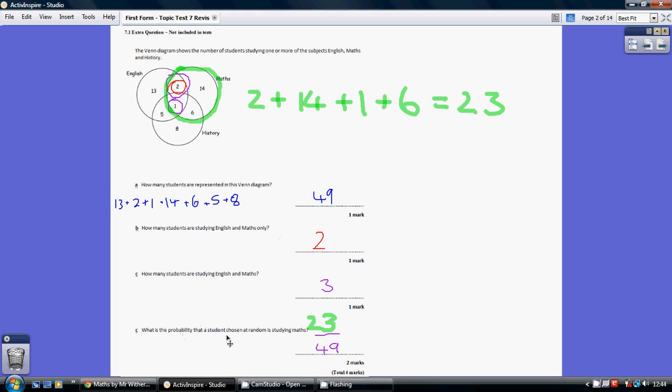What is the probability that a student chosen at random is studying maths? So we want all the students studying maths divided by the total number of students. All the students studying maths, regardless of what else they are studying, is everybody inside the maths circle.